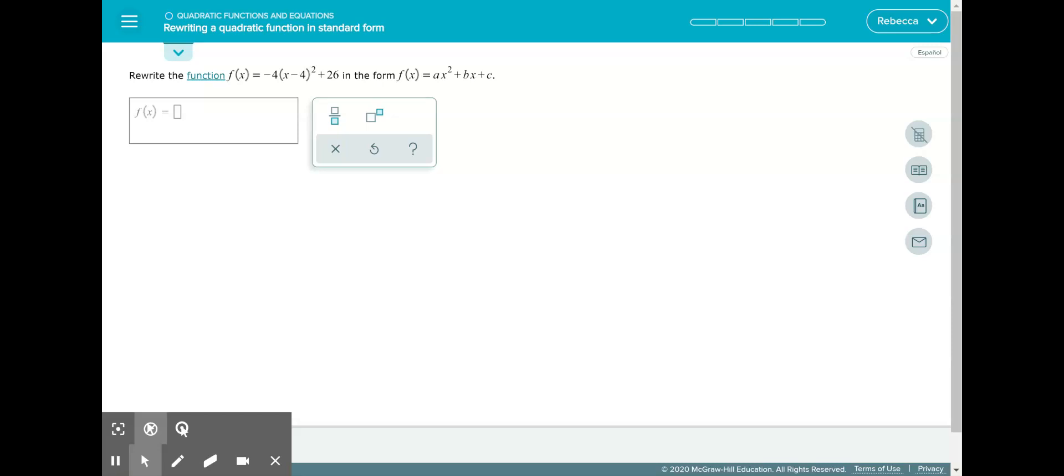You're writing a function in standard form. So what it's asking us to do is rewrite the function f of x equals negative 4 times x minus 4 quantity squared plus 26.